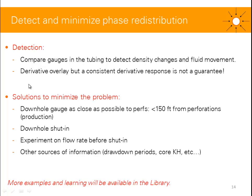So what can we do to detect phase redistribution? Well, if we've got different gauges in the tubing, you can compare them to detect density changes and fluid movement — that might be the case for exploration and appraisal wells. You could do a derivative overlay, but it is important to know that a consistent derivative response is not a guarantee. If you've got a consistent response on your derivative plot with different PBUs, that doesn't mean that you don't have phase redistribution.